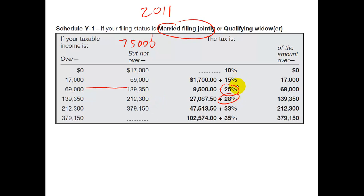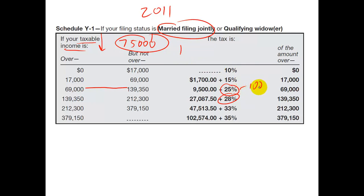Marginal rates tell you how much more taxes you have to pay above a certain amount you already have. We'll also talk about deductions that reduce your taxable income. The question is: how much taxes are you going to save if you have additional deductions? If you're in this 25% tax bracket and you have a $1 deduction, you're not going to save $1 in taxes — you're going to save 25 cents. If you have $100 of deduction, you save $25; if you have $1,000, you save $250. So marginal rates are good for planning purposes to see how much more or less you'll be paying.